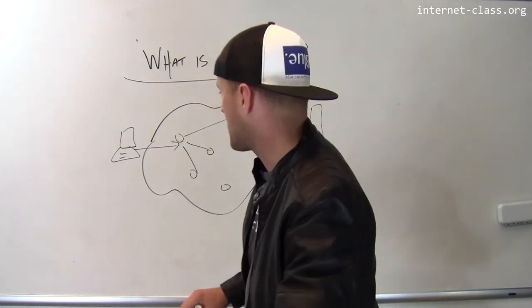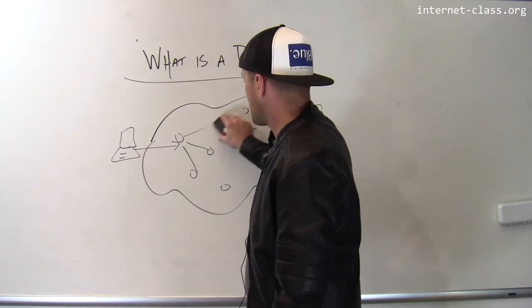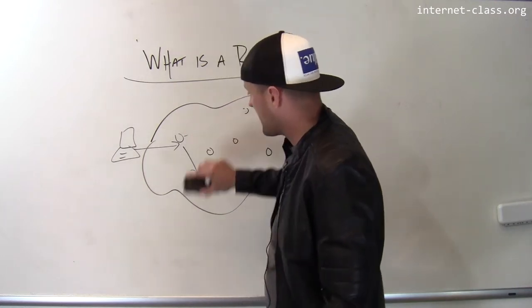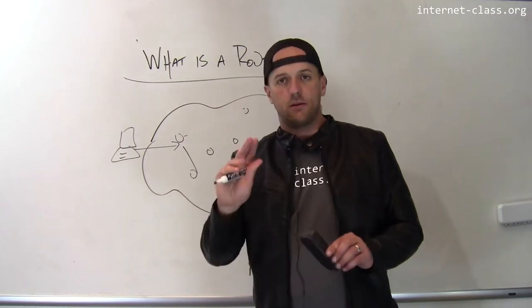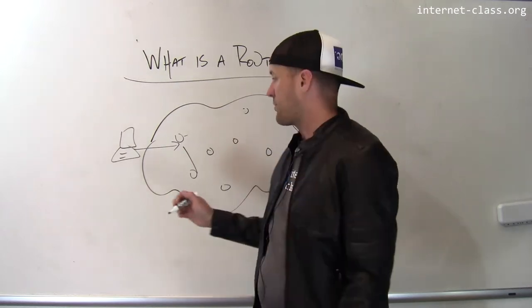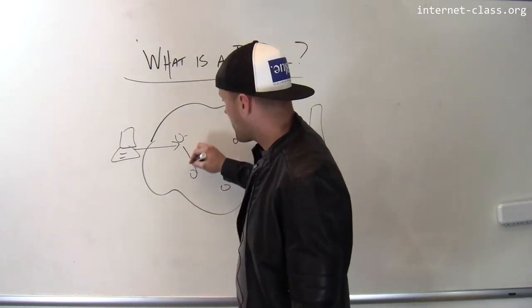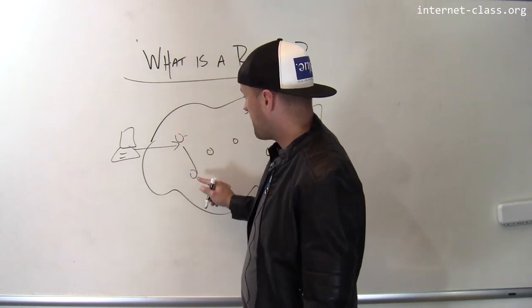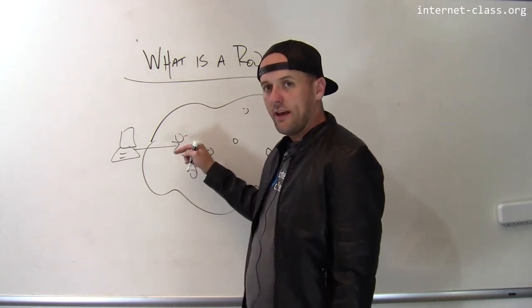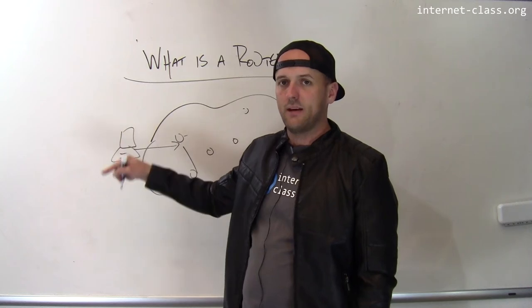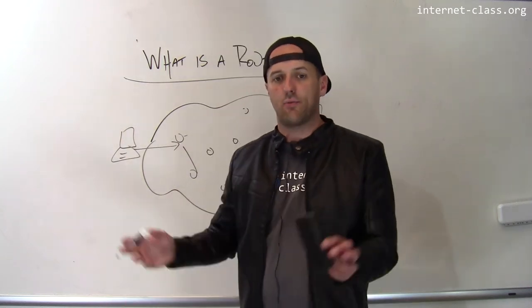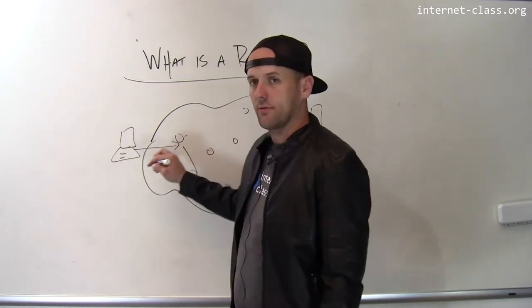Now, you might notice something - for a router's job to be interesting, it has to be connected to at least three other routers or computer networks. For example, if the router only has two connections, then when a packet comes in on one connection, it has to go out on the other. To some degree, there's no real point to have a router there at all. Same thing with the other direction.